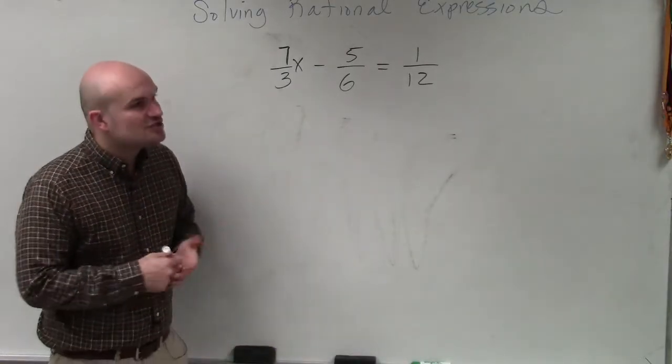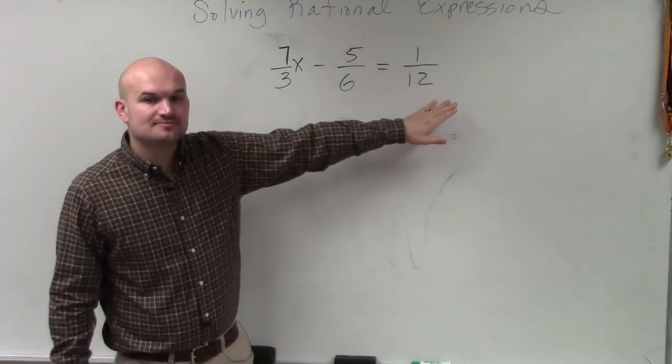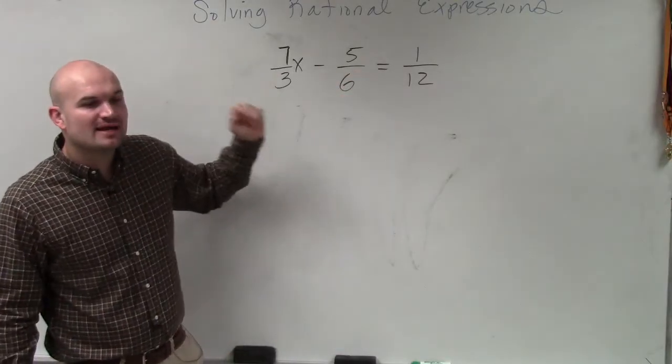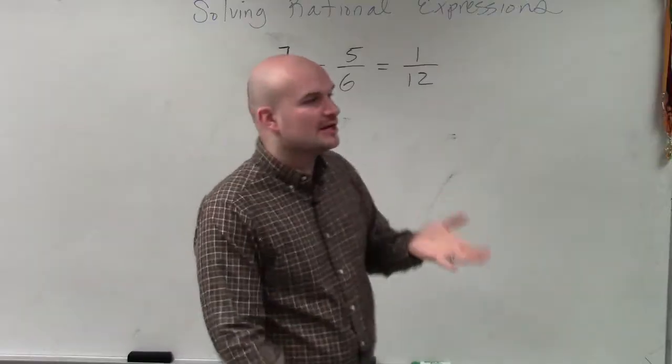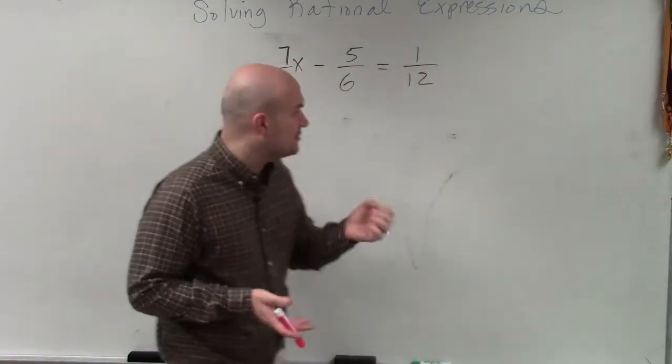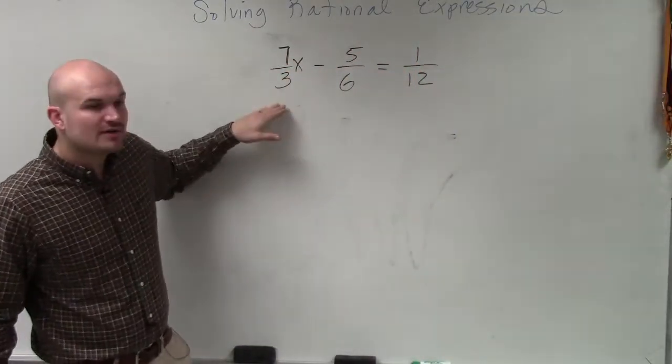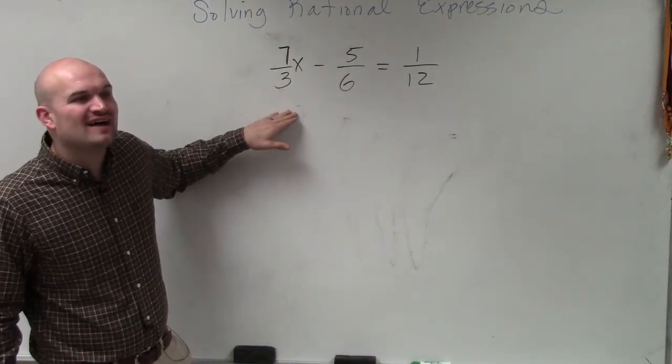To get rid of the fractions, what we can do is multiply every single term by the LCD. And I'll explain again why that works. The least common denominator is the smallest number that all of your denominators divide into. So between 12, 6, and 3, what is the smallest number that they all divide into?